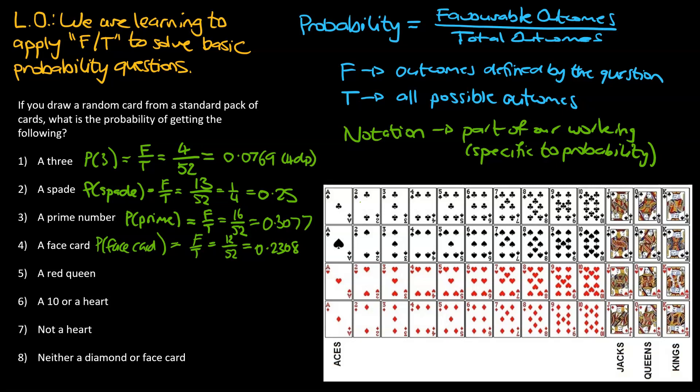The next question, probability of a red queen. So hopefully we get in the hang of these and we can go through these a bit faster. Probability of a red queen. Same deal, F over T. So there are still 52 cards of interest. Of those 52, how many of them are red queens? And we can see we've got 1, 2 down the bottom. So that's going to be 2 over 52. And that gets us to 0.0385. And that's rounded to 4 decimal places as well.